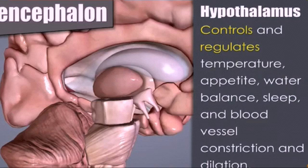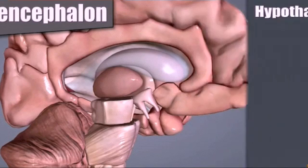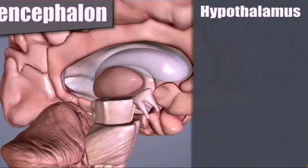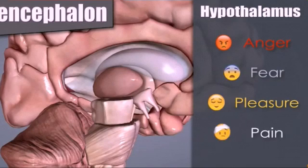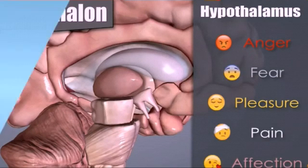The hypothalamus also controls blood vessel constriction and dilation, and releases hormones that control our emotions like anger, fear, pleasure, pain, and affection. Coming to the fourth part of our brain, it is the midbrain.